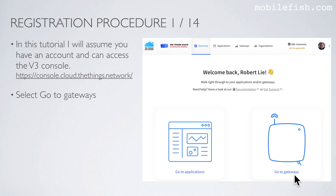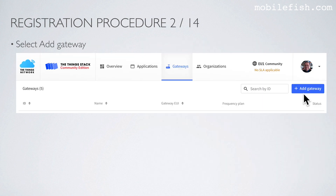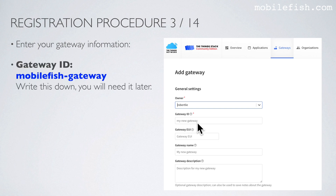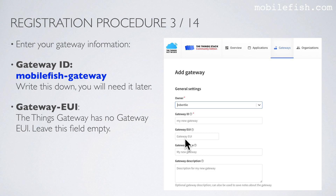Select Go to Gateways, then select Add Gateway. Enter your gateway information and enter a Gateway ID. In this tutorial, I will use this Gateway ID — write this down, you will need it later. The Things Gateway has no Gateway EUI, so leave this field empty.